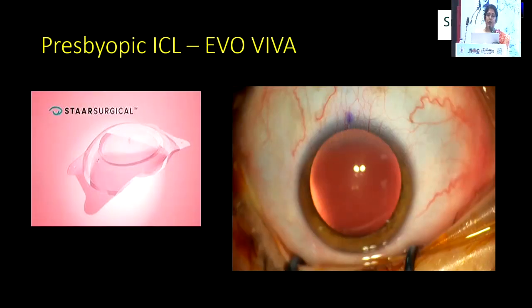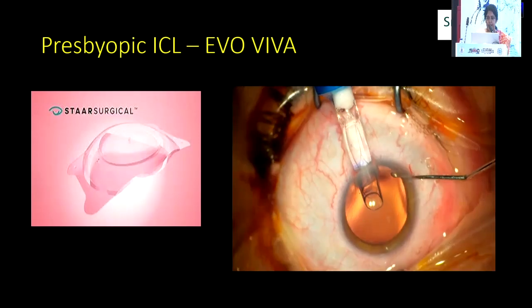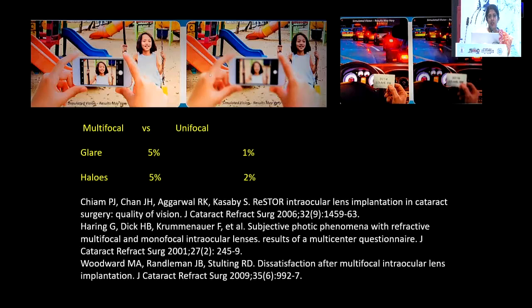An upcoming option is presbyopic ICL. A wide range of the population is waiting for an ideal method of correction for presbyopia, and this will be a promising one — in Europe they are already practicing it. Presbyopic ICL is mainly for myopic individuals who have not yet developed cataracts. Overall, the great difference between multifocal and unifocal IOLs comes down mainly to glare and halos caused by multifocal IOLs, as shown in comparison studies.